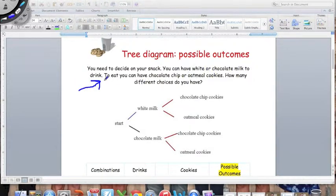Tree diagrams show all the possible outcomes of experiments and then we can get ourselves a sample space. Look at this scenario on possible outcomes: you need to decide on your snack. You can either have white milk or chocolate milk to drink. To eat you can have chocolate chip cookies or oatmeal cookies. How many different choices do you have? This one's very basic but here's how we make our tree diagram. Organization comes down to it when we're making tree diagrams. You make a start and then you can either have white milk or chocolate milk. Let's just focus up here. If I chose white milk, what are the two cookie choices I could have? Well I could either have chocolate chip cookies or I could have oatmeal cookies.